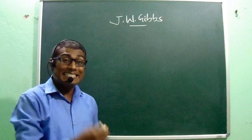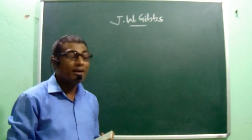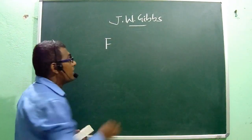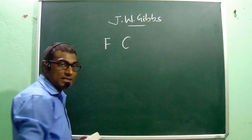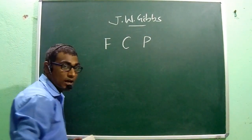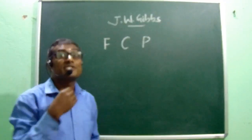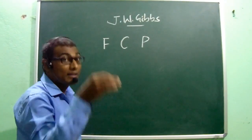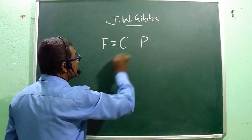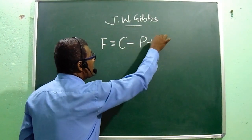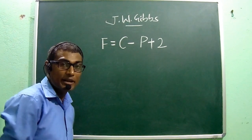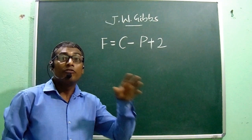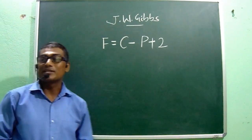Gibbs established a relationship between the number of degrees of freedom, number of components, and number of phases of a heterogeneous system at equilibrium. The relationship is F = C - P + 2. We have to derive this equation both for reactive and non-reactive systems.